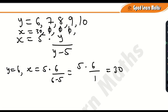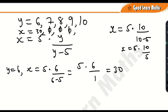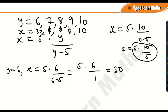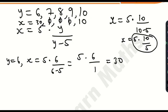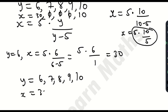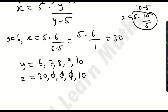When y = 10: x = 5 × 10 / (10 − 5) = 50/5 = 10. So when y is 10, x is also 10. To summarize: y can be 6, 7, 8, 9, or 10, giving x values of 30, null, null, null, and 10 respectively.